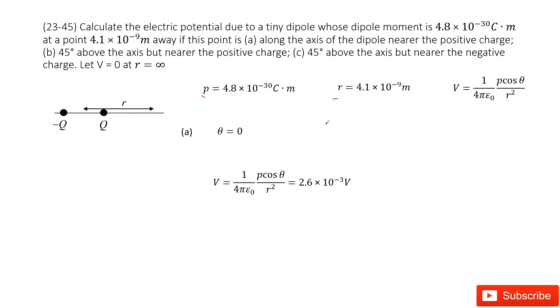In the first case, this point is along the axis of the dipole near the positive charge. This is P, the position we're interested in.